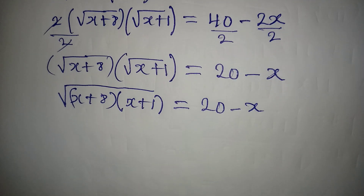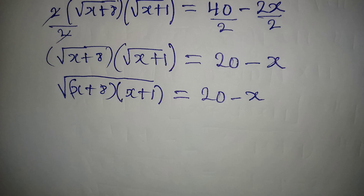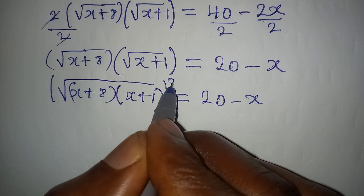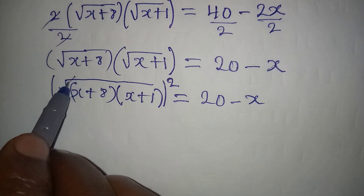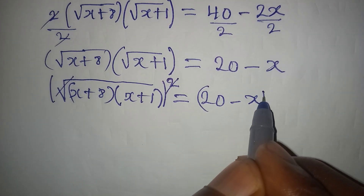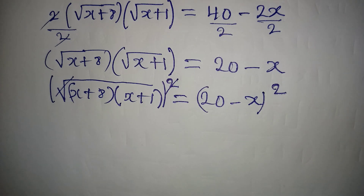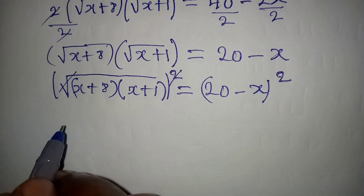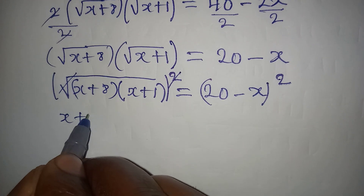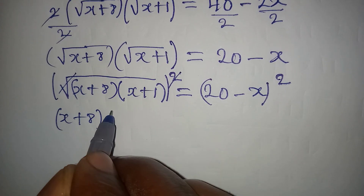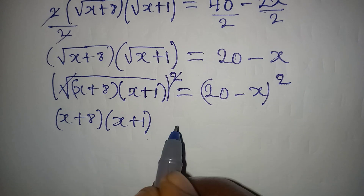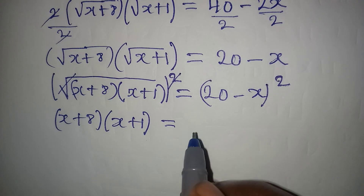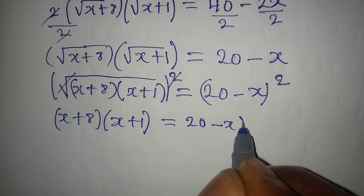Now I can square both sides so that the square root is eliminated. Squaring both sides: (x + 8)(x + 1) equals (20 minus x) squared. Let's expand both sides.